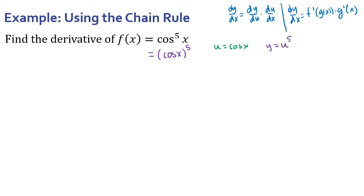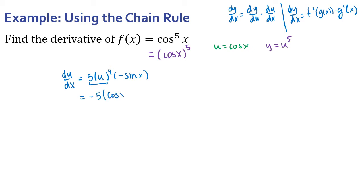We could go through and use Leibniz notation — I'm going to do that really fast. So dy/dx, that's going to be the derivative of y with respect to u, which is 5u to the fourth, times the derivative of u with respect to x, which is negative sine x. Then I'm still going to have to go back through and substitute in what u was. So that is essentially finding the derivative of the outside function with respect to the inside. We can skip a step by doing it the prime way, but it's important to understand how these all mean the same thing.